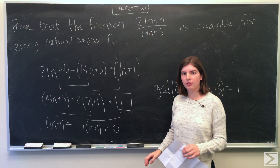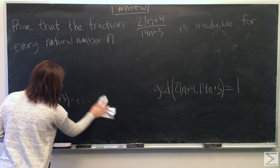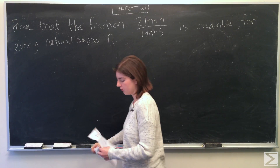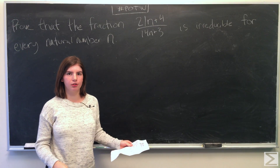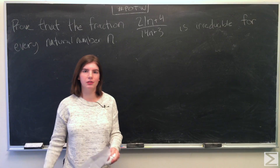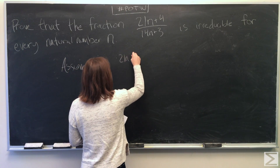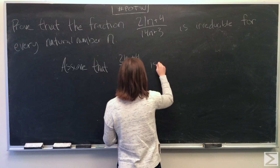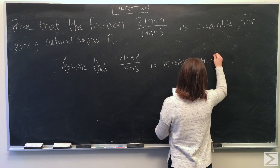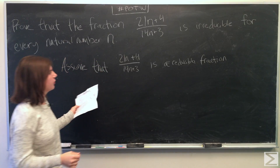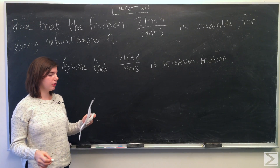I'm going to show you another method to solve this problem where we do a proof by contradiction. So we're going to assume that the fraction is reducible, and then we'll find the contradiction, which will prove that our statement is actually irreducible. If we assume that it's a reducible fraction, that means there must be some divisor of the numerator and denominator that's greater than 1.